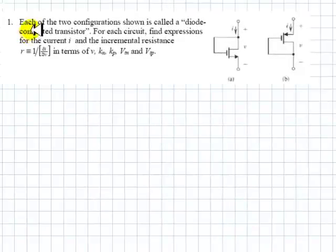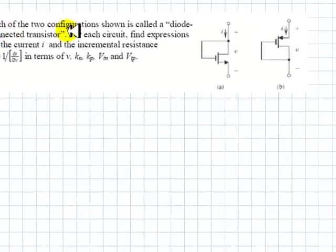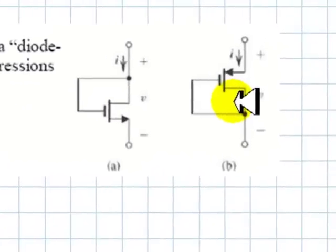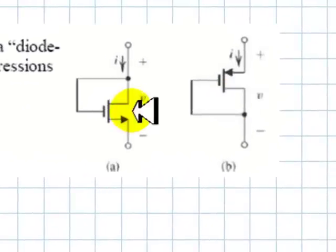Question 1. Each of the two configurations shown is called a diode-connected transistor. For each circuit, find expressions for the current I, this current.